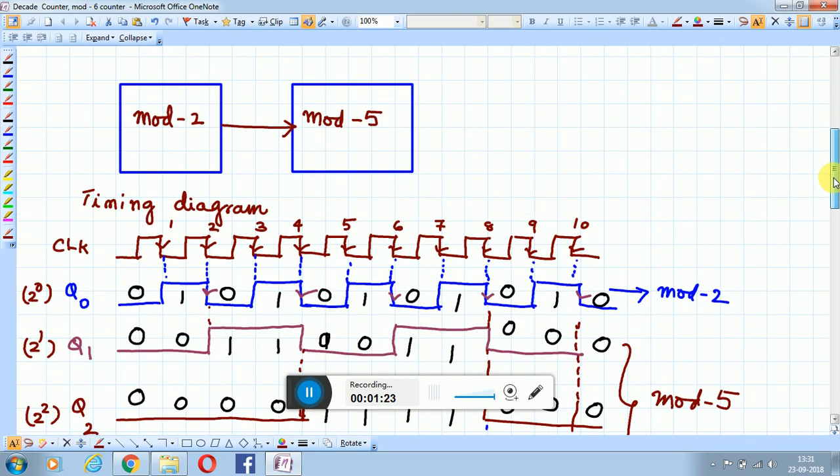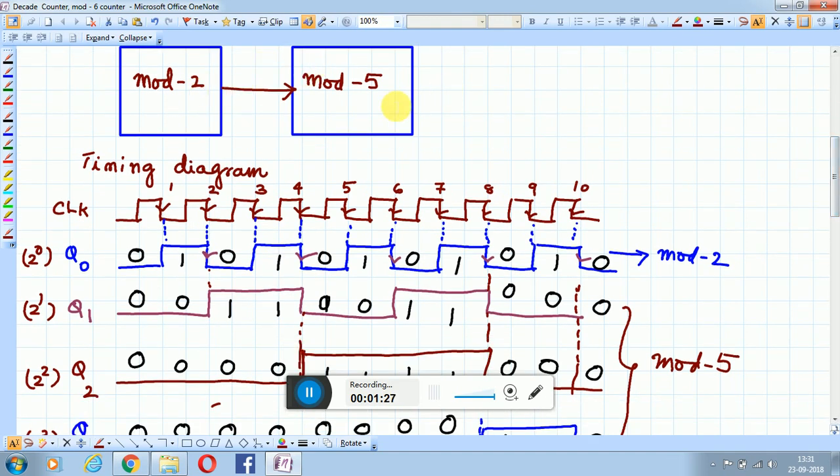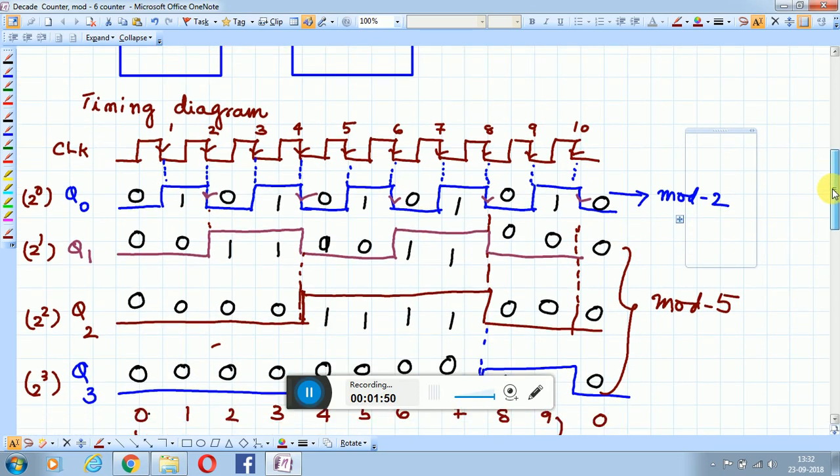To this counter, if you add mod-2, it becomes mod-2 times mod-5, which equals mod-10. This is the existing mod-5 counter. To make it a mod-10 counter, you need 10 clock pulses. Q0 behaves as mod-2, toggling at every clock pulse: 10, 9, 8, 7, 6, 5, 4, 3, 2, 1. This output becomes the clock to the mod-5 counter.